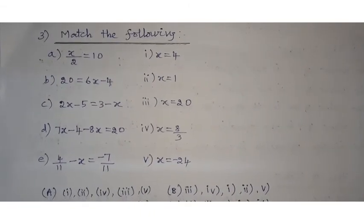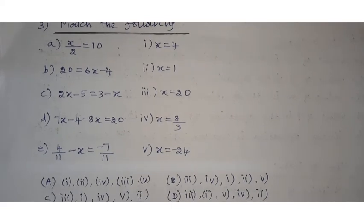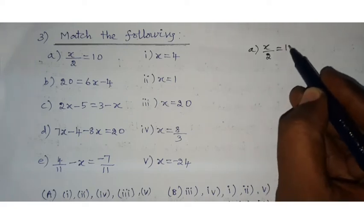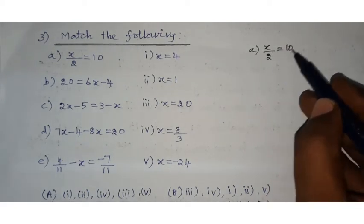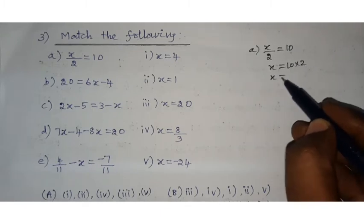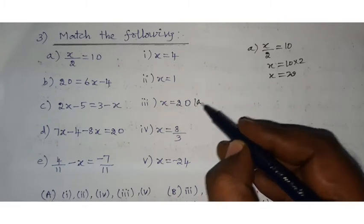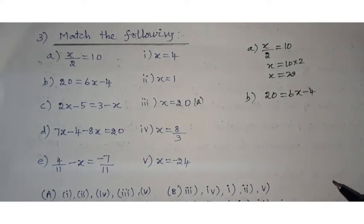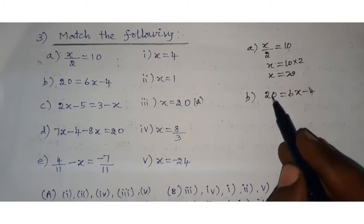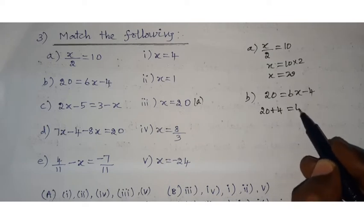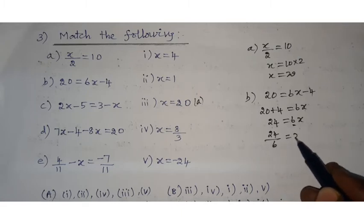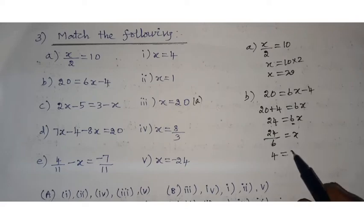Now, match the following. Option A: x by 2 equals 10. Here 2 is in division, bring it to the other side as multiplication — x equals 10 into 2, so x equals 20. Option B: 20 equals 6x minus 4. Bring minus 4 to the other side as plus: 20 plus 4 equals 6x, so 24 equals 6x, therefore x equals 24 divided by 6, which is 4.